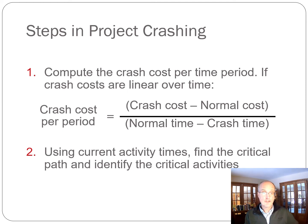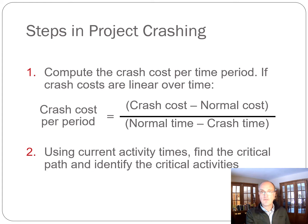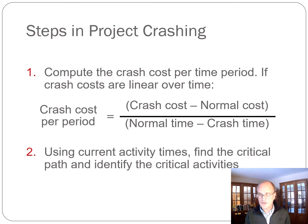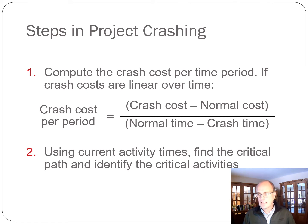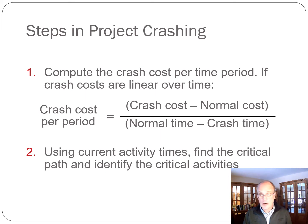If we shorten the time it takes the 45-minute driver to get to Toronto by 15 minutes so they arrive in 30, then all of a sudden I become the critical path because I still take 35 minutes. That demonstrates two concepts: first, shortening my time originally does nothing for the meeting time because the other person takes longer; and second, if you shorten the other person by 15 minutes without considering my time, you still won't meet the 30-minute timeline because another path becomes critical.